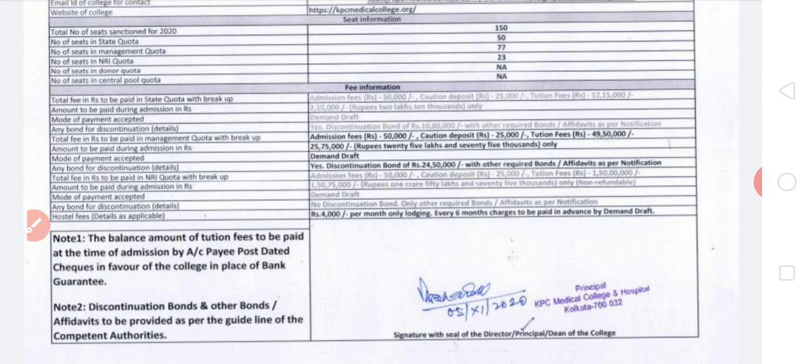Hostel fees are ₹4,000 per month for lodging only, to be paid every six months in advance by demand draft. So six months comes to ₹24,000. Apart from lodging, food in the hostel mess costs approximately ₹20-25 for breakfast, ₹50 for lunch, and ₹50 for dinner, paid on the basis of meals consumed. You can also order from outside or go out to eat. Hostel is not compulsory for everyone.